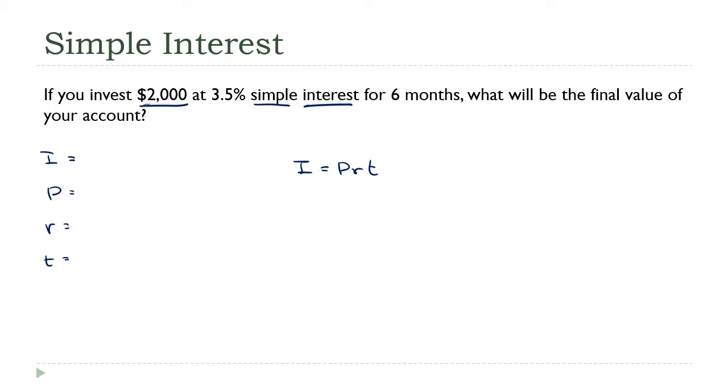We're investing $2,000. That's the principal. The interest rate is 3.5, so I'm going to make that 0.035. For six months. So here's where we need to be careful. Remember what I said on the last slide. The time values have to be consistent because the interest rate is an annual rate. This needs to be the time in years.